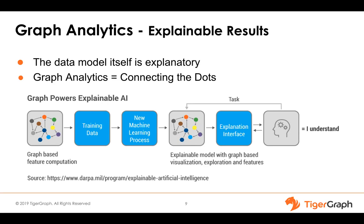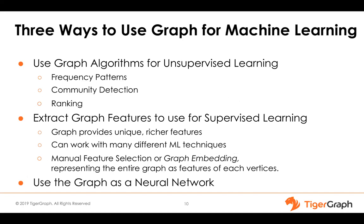Graphs are very useful for machine learning in several ways. One way is for unsupervised learning, because we have algorithms for frequent pattern detection, clustering and community detection, and ranking. Many of you have heard of PageRank — it's finding the most influential or authoritative entities within a graph. That is a form of unsupervised learning, and it can also be useful as a feature to feed into supervised learning.